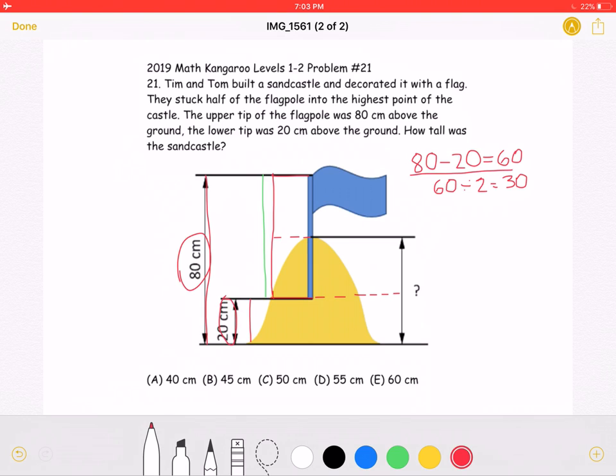So if we subtract the two, we will get 60 cm as the height of the flagpole.